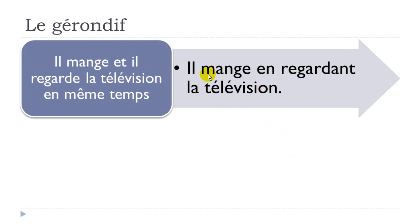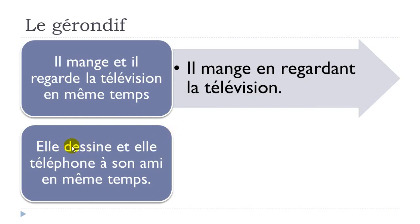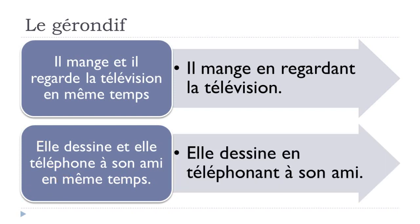Second example: 'elle dessine et elle téléphone à son amie en même temps' becomes 'elle dessine en téléphonant à son amie'. Dessiner is to draw, téléphoner is to phone. The participe présent of téléphoner is téléphonant, preceded by 'en'.